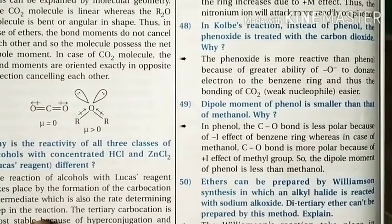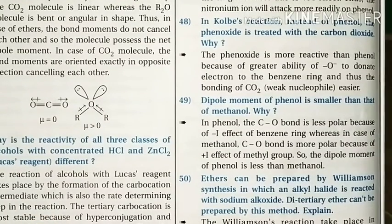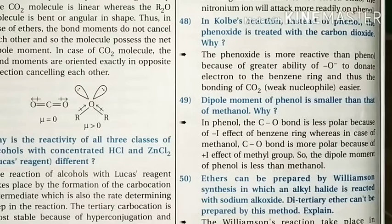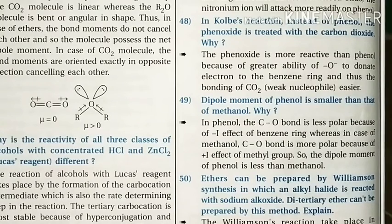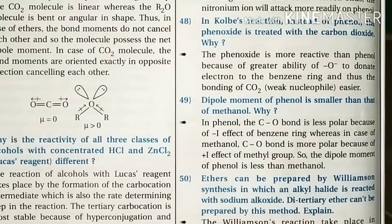Question 48 (Kolbe reaction): Why is phenoxide used instead of phenol with carbon dioxide? The phenoxide ion has a greater ability to donate electrons to the benzene ring, making it more reactive than phenol towards electrophilic aromatic substitution. In other words, phenoxide ion, being a stronger nucleophile, reacts easily with the weak electrophilic carbon dioxide to bring about electrophilic substitution reactions.